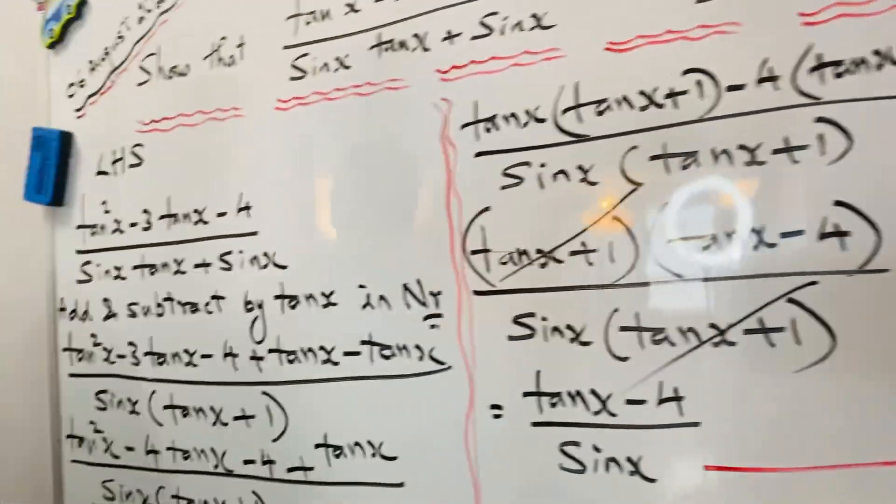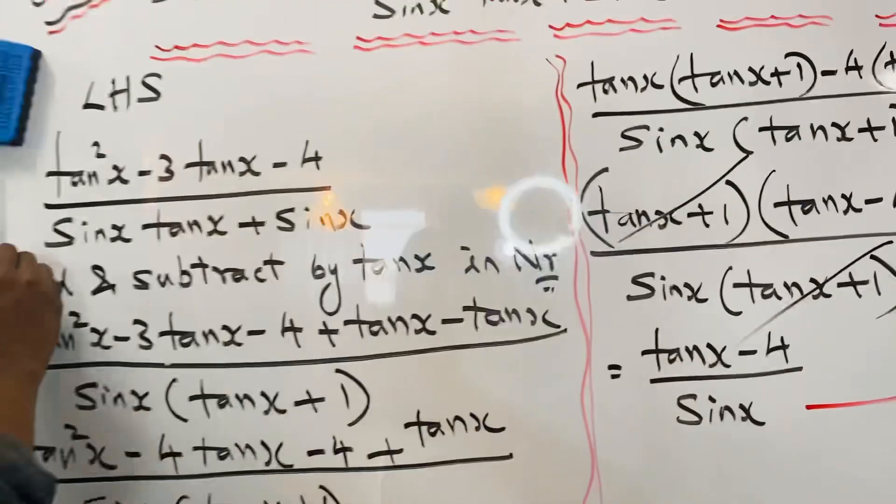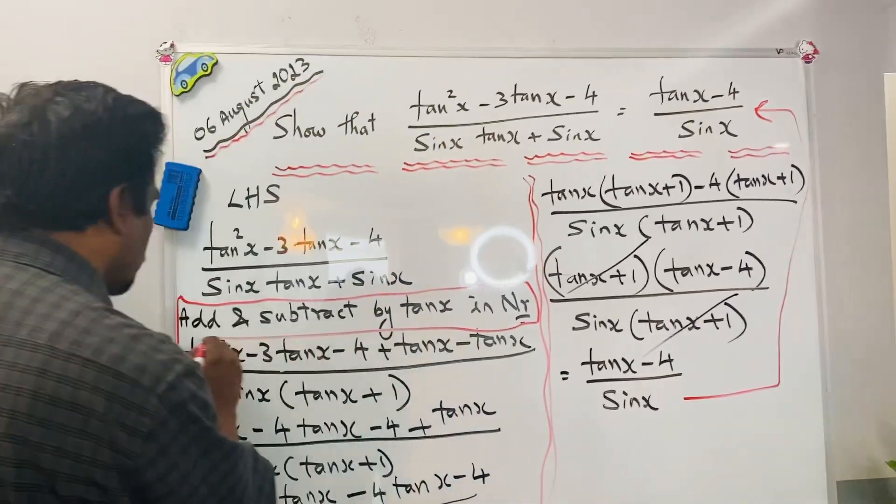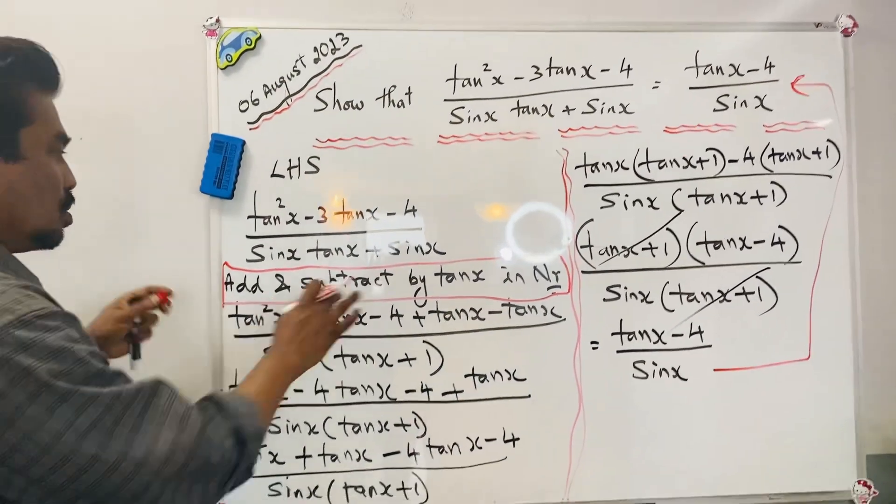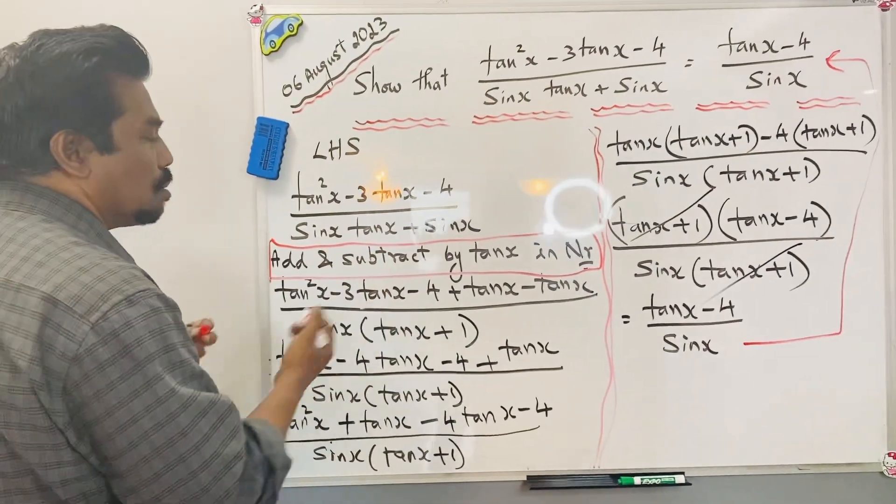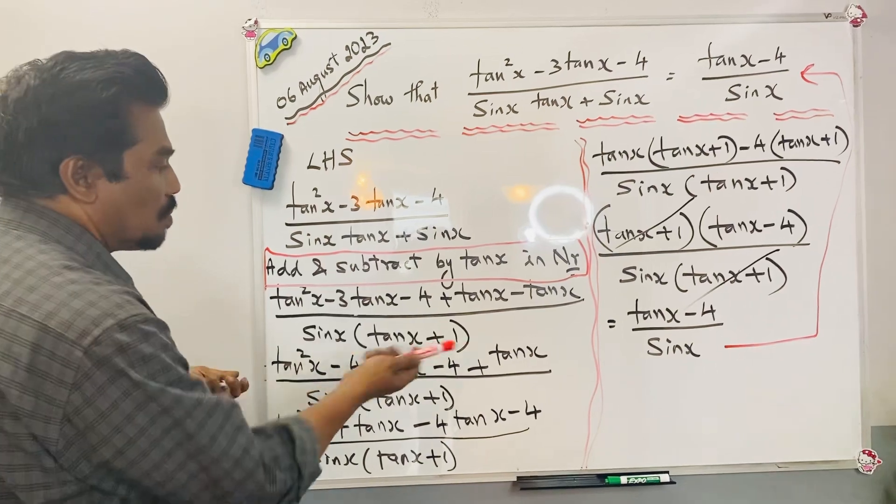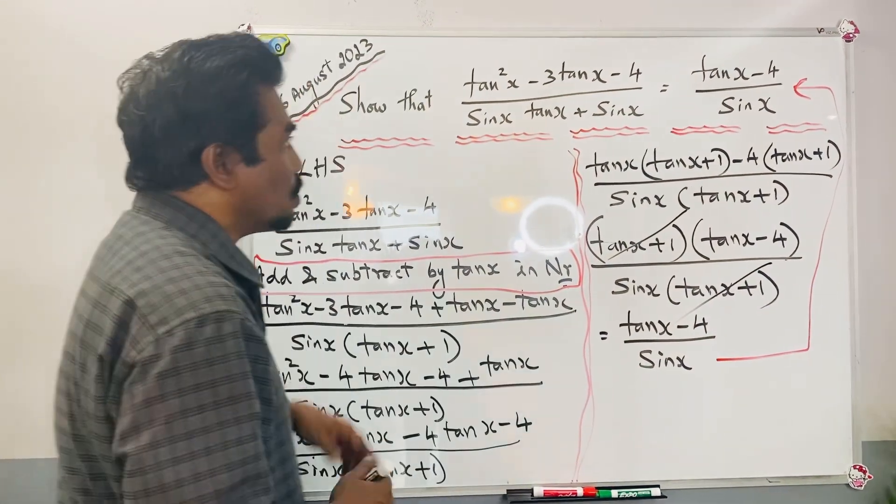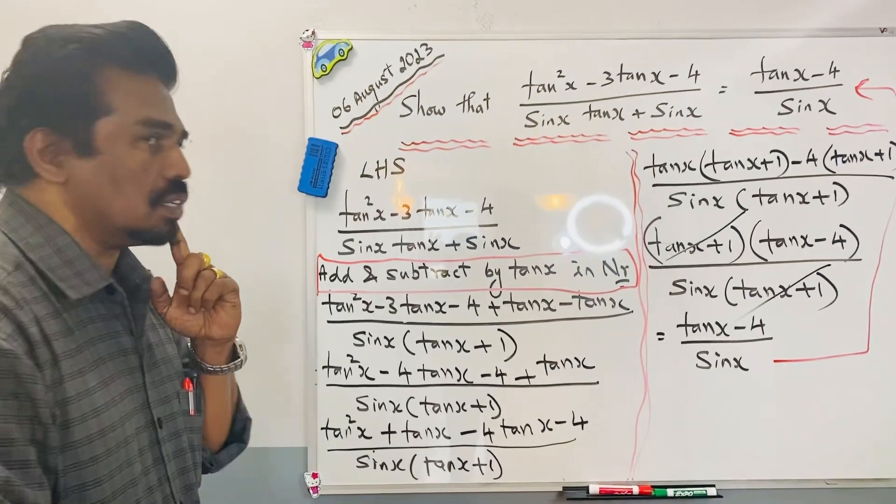So the identity has been proved. The only one manipulation that I have added is add and subtract tanx in the numerator form. The value didn't change. So this is a trick. It's not a trick, it's a trigonometric manipulation. Finally, we are able to get that final answer. Thank you for watching my video. See you in the next video.